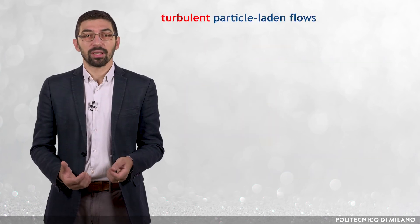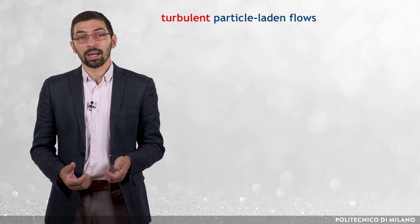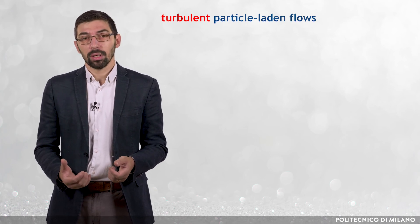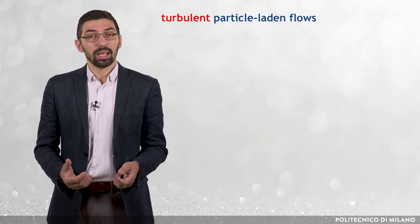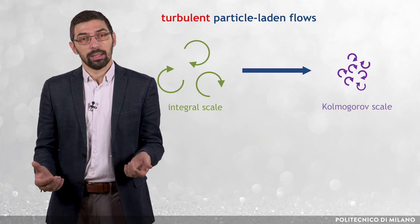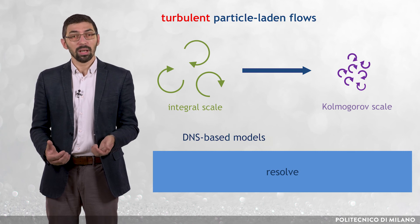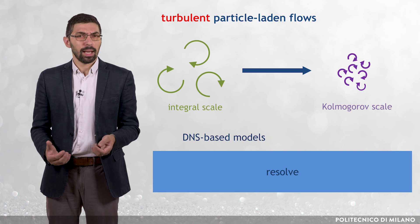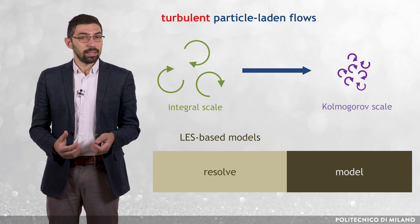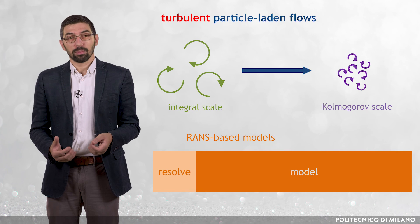As a concluding remark, consider that most particle-laden flows of engineering interest are turbulent, and therefore CFD models are also classified according to the approach to turbulence modeling. The classification is analogous to that of single-phase flow simulations, which is based on the consideration that turbulence develops across multiple scales, spanning from the biggest, called the integral scale, to the smallest, called the Kolmogorov scale. DNS-based models involve the direct solution of the Navier-Stokes-like equations, and therefore resolve all turbulence scales. LES-based models resolve all turbulence scales down to a certain level, and model the smaller ones. Finally, RANS-based models resolve only the integral scales of turbulence, whereas all the other turbulence scales are modeled.